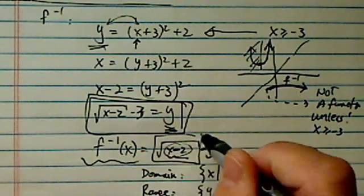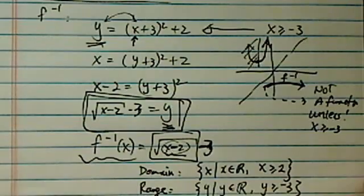The reason is that the smallest this one can ever get is zero. Okay, when it gets to be zero, then minus three is as large as I'm going to get it.